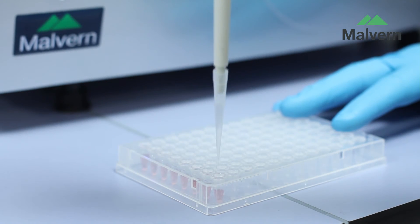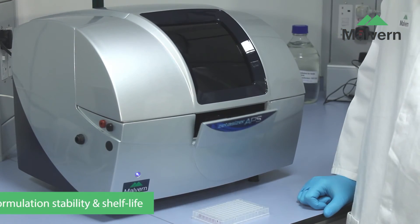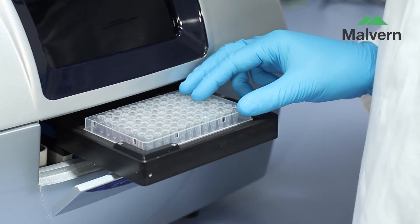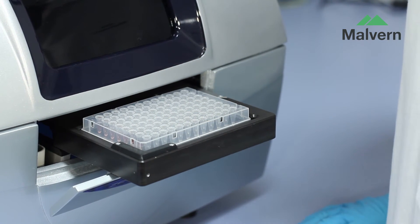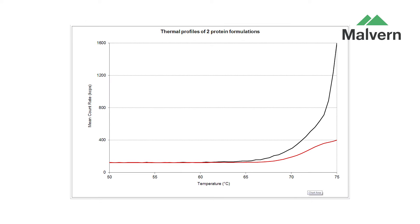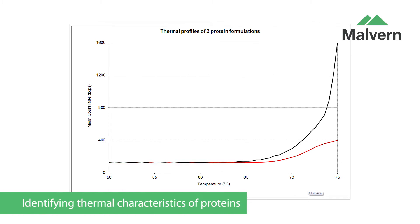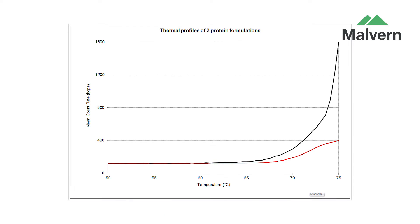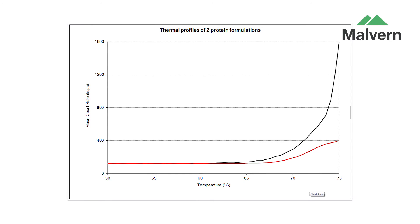The Zetasizer APS can monitor changes in size, scattering intensity and polydispersity over time to optimize conditions for long-term formulation stability. Protein size and scattering intensity can be measured over a user-defined range of temperatures. Any changes in protein structure in response to temperature changes are clearly identified, giving information on purity and an indication of the aggregation point, or the temperature at which aggregation begins.